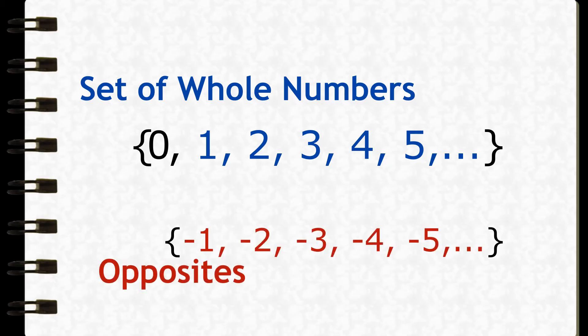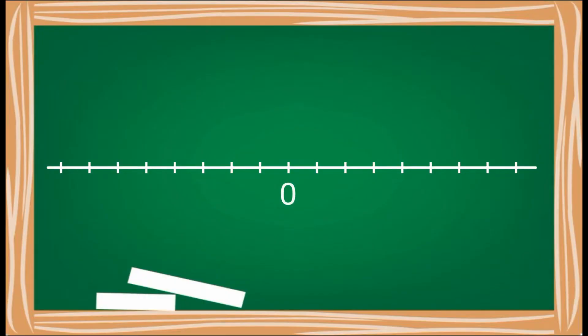So let's locate integers on the number line. If zero is here, where is five? You're right, five is here. How about negative two? Very nice, negative two is here. How about negative six? Correct! It's here!